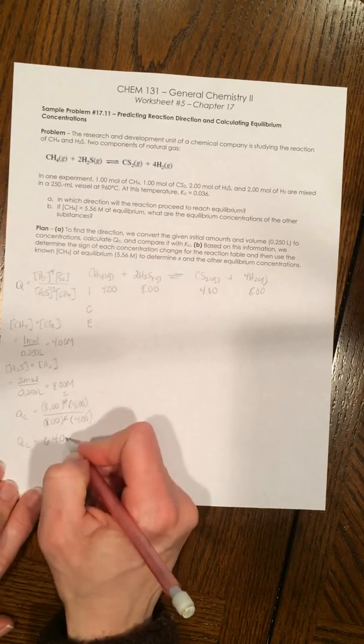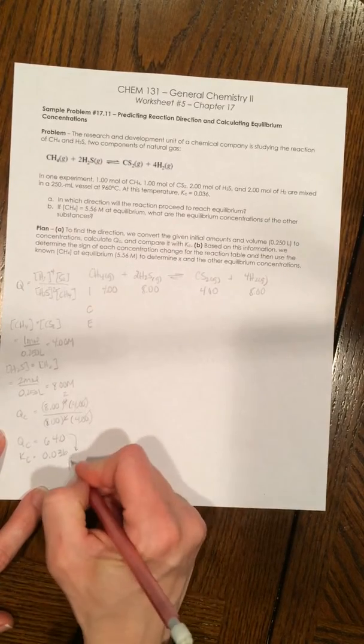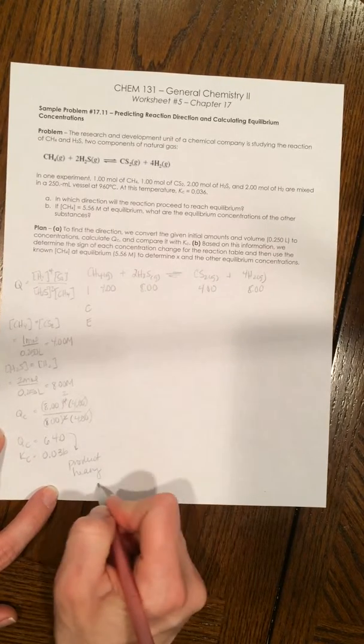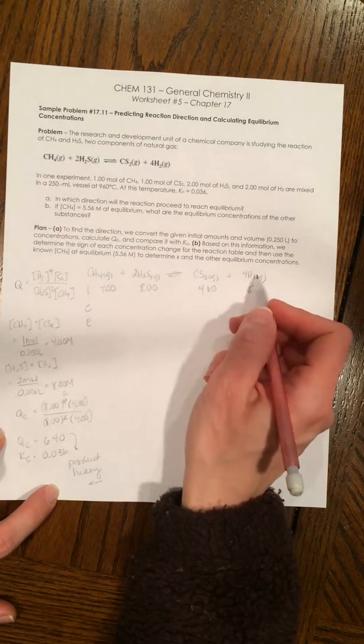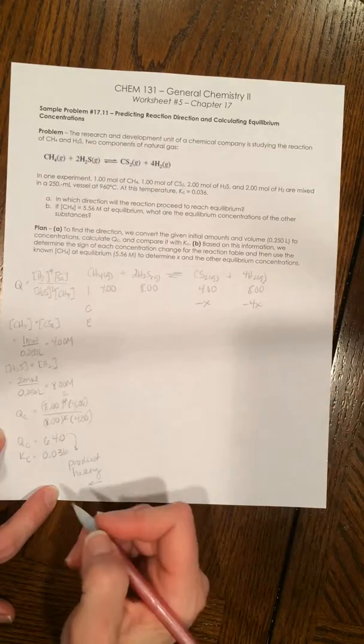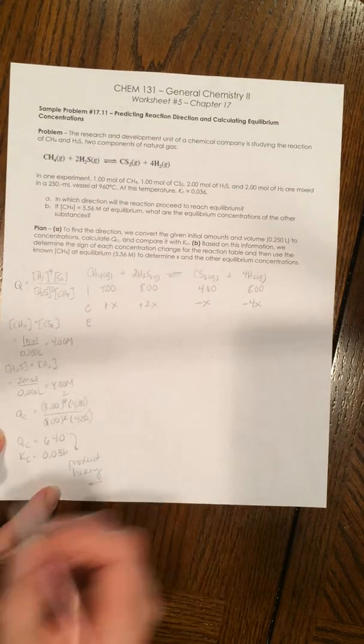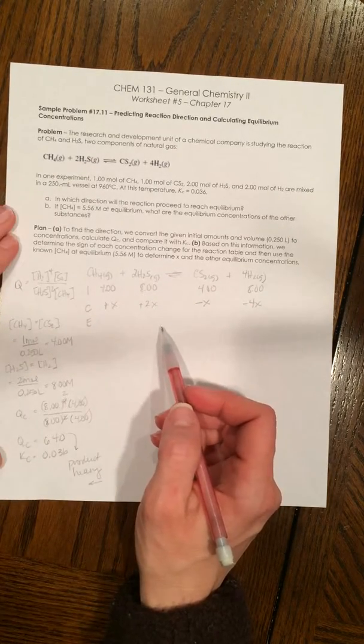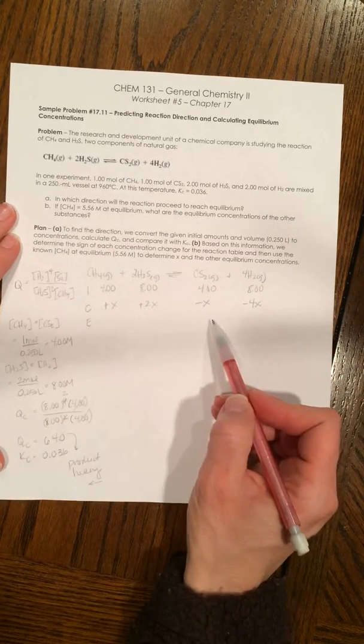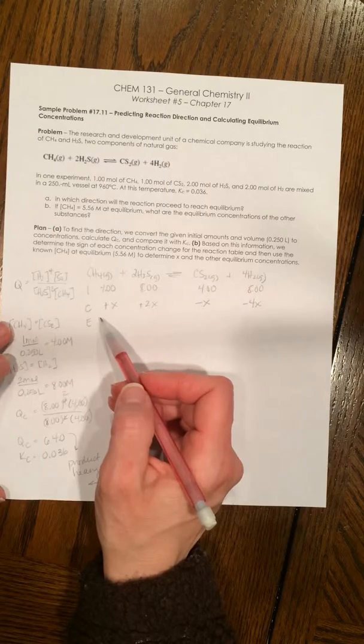In this case, QC compared to KC, which is 0.036, this means we are product heavy. And when we are product heavy, that means our reaction needs to shift to the left. So that means we're going to be getting rid of some of our products here. So we're going to have minus X and minus 4X. And we're going to be gaining some of our reactants back. So plus X and plus 2X. So again, this problem is unique and different from other ones that we've done. And that this reaction actually is going to shift back towards reactants. So we have negative variables in our change column for products and positive variables in our change columns for our reactants.